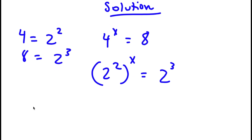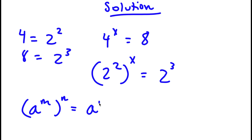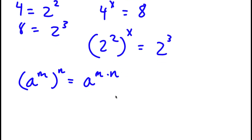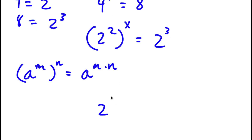Now, if I have something in the form a to the power of m to the power of n, this is simply equal to a to the power of m times n. So 2 to the power of 2 to the power of x is going to equal 2 to the power of 2 times x, which is simply 2x, which is equal to 2 to the power of 3.